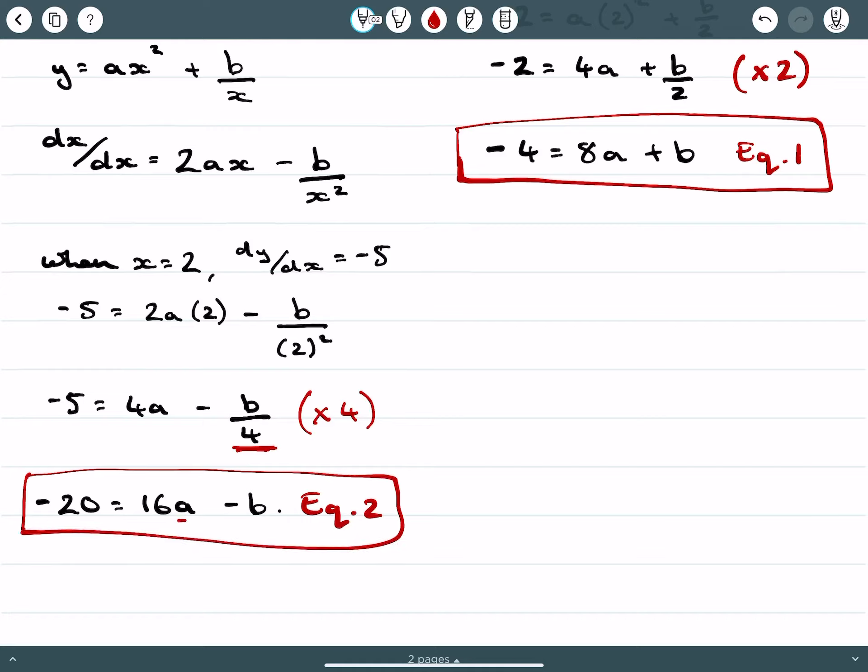I've got two unknowns, a and b, so I need two equations to solve them simultaneously. By getting them in this form, I can solve them using elimination. I'm eliminating b by adding the expressions together. This gives negative 24 equals 24a, and a equals negative 1.